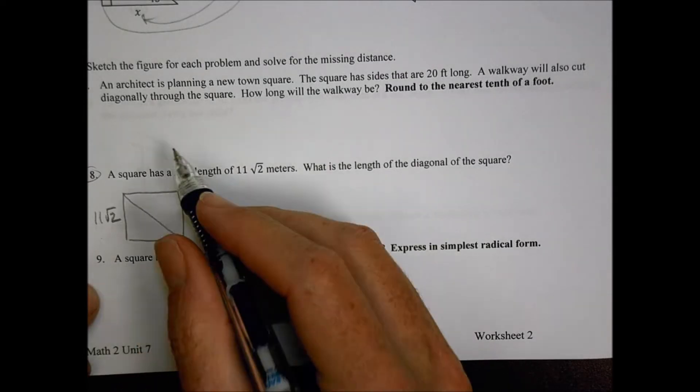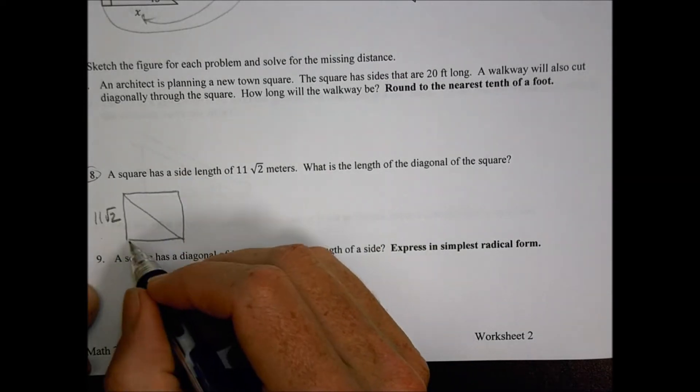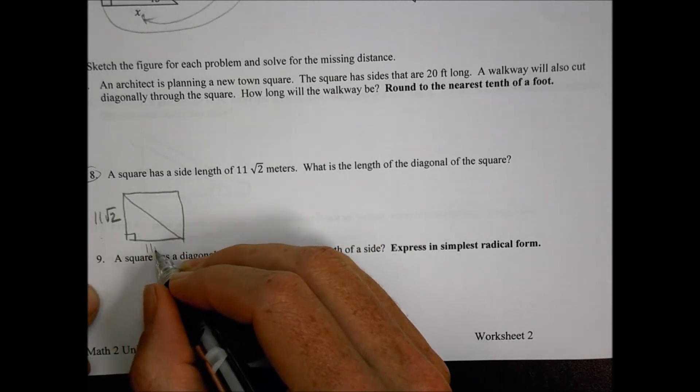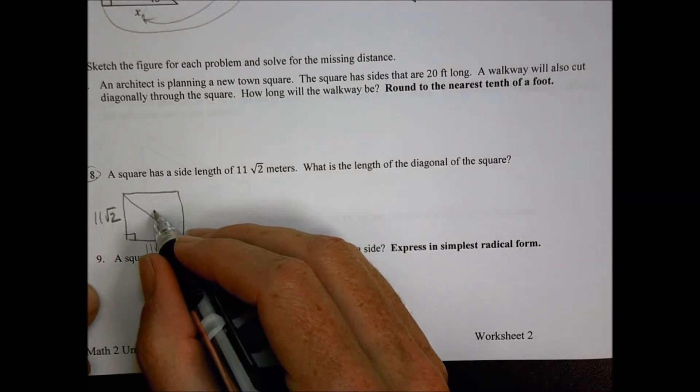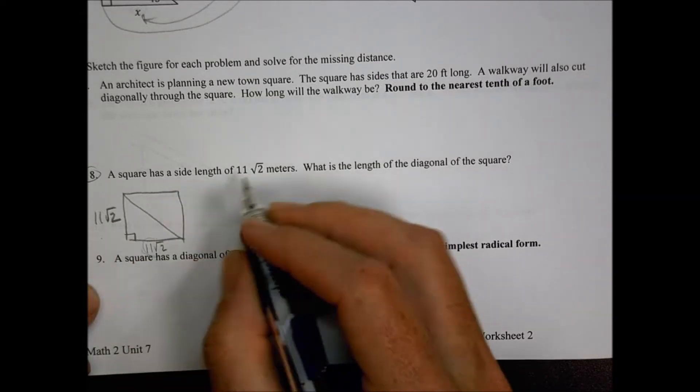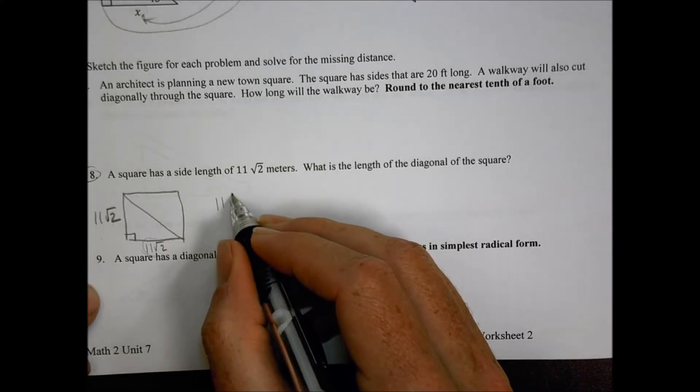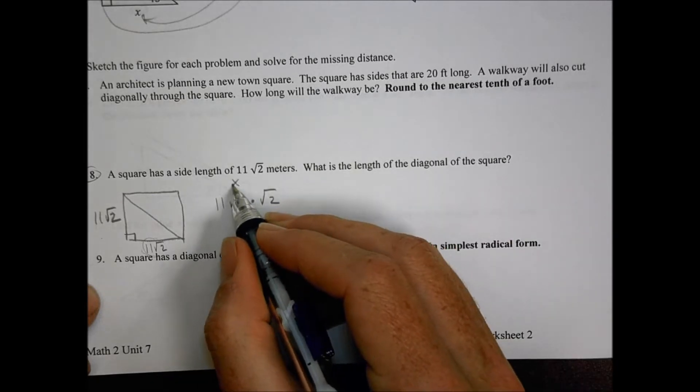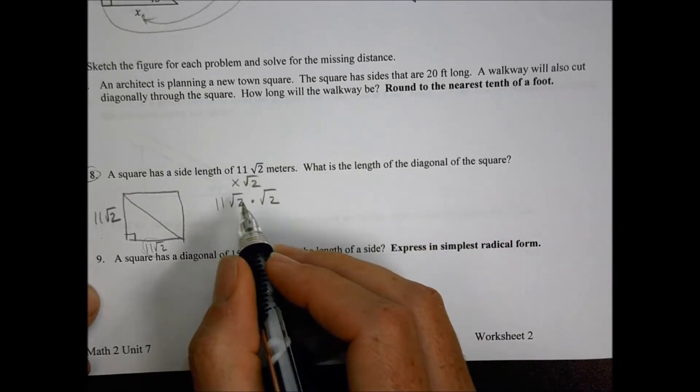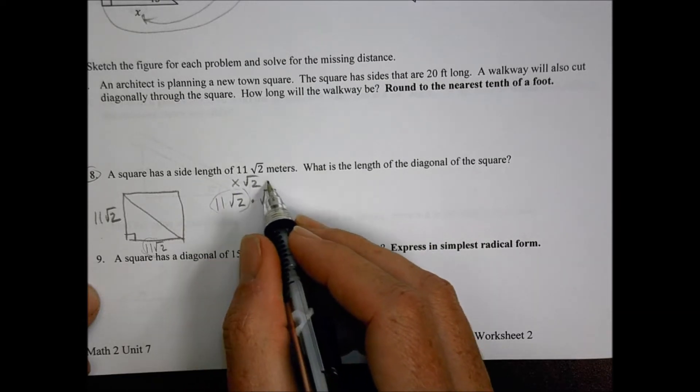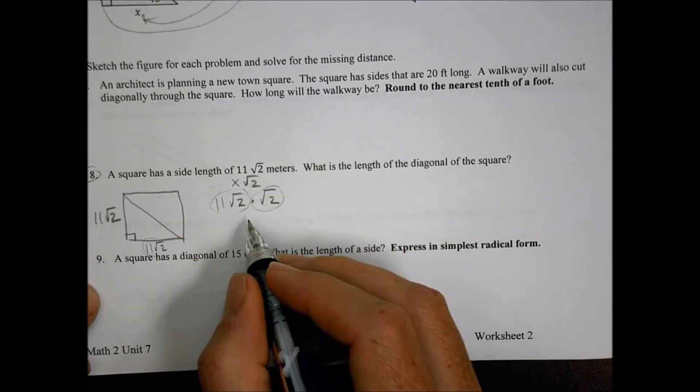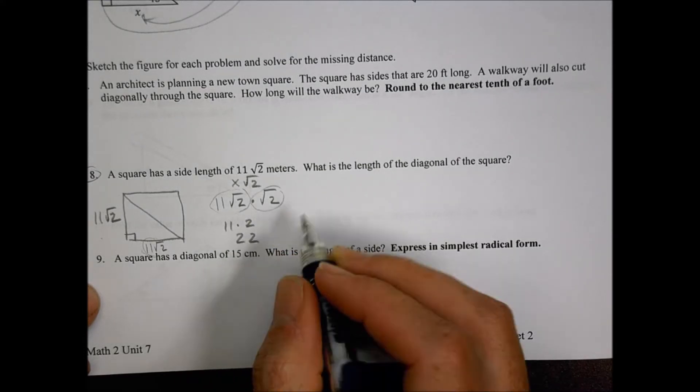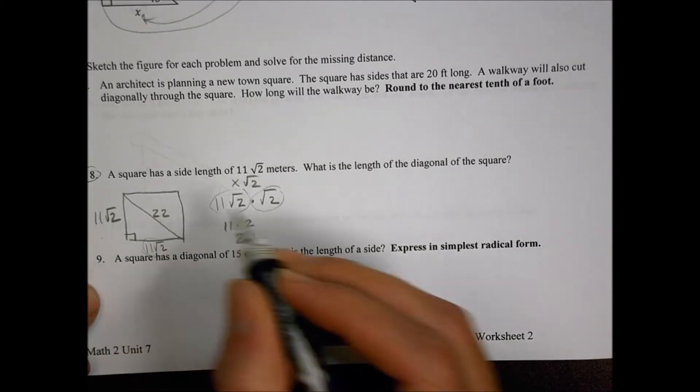What's this diagonal going to be? Well, I could consider this to be the 45, 45. So I could say this is 11 root 2 over here, and so then this becomes that. My X value, 11 root 2 times a root 2, because it is going to be X root 2. My X value is 11 root 2, and then my root 2 is just right here. Root 2 times root 2 is going to be 2, so 11 times 2 is 22. So my diagonal is actually going to be 22.